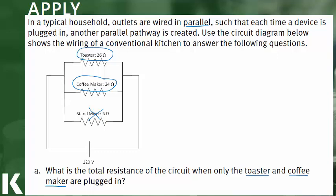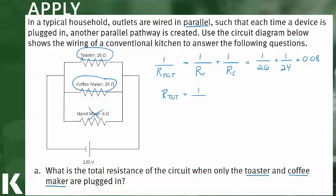The toaster and the coffee maker are wired in parallel, so we'll use our formula for things wired in parallel. One over R total equals one over the resistance of the toaster plus one over the resistance of the coffee maker — that's one over 26 plus one over 24. Crunching the numbers gives us 0.08, but remember that's one over R total. To get the total resistance we take the reciprocal: one over 0.08 equals 12.5 ohms. That is the total resistance when just the toaster and the coffee maker are plugged in.